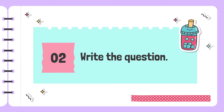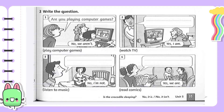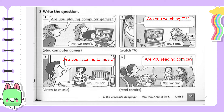Now exercise two: write a question. For each picture, you are given a word or phrase as a hint, and you form a matching question. Example — picture one has the hint 'play computer game', so the question is: 'Are you playing computer game?' Picture two hint is 'watch TV' — 'Are you watching TV?' Picture three hint is 'listen to music' — 'Are you listening to music?' Picture four hint is 'read comics' — 'Are you reading comics?'